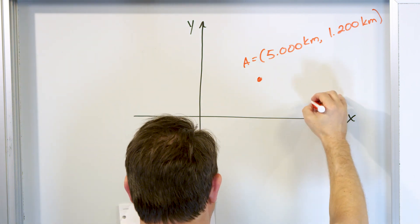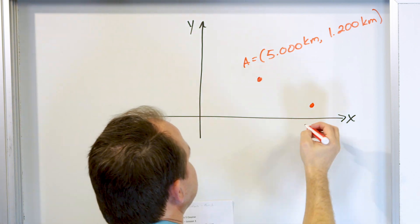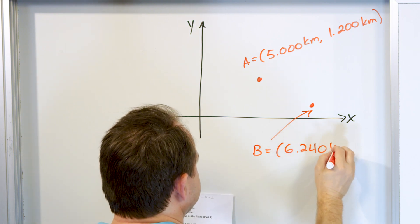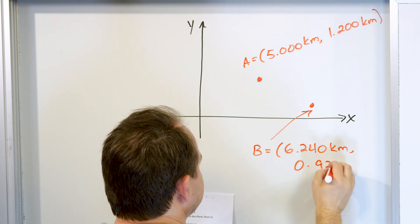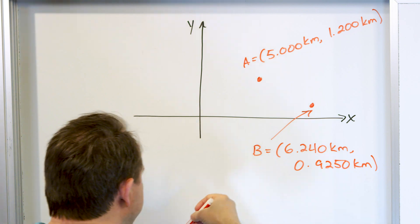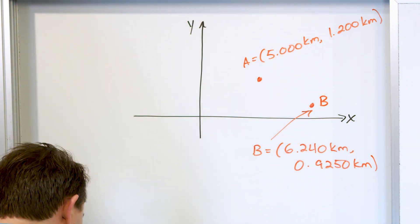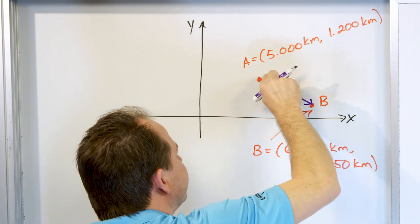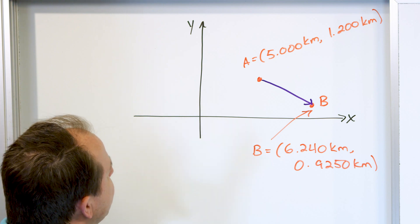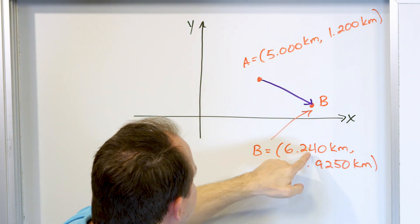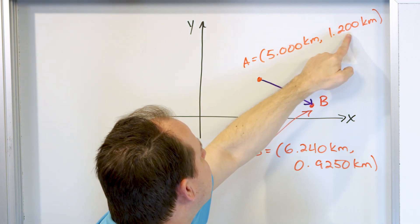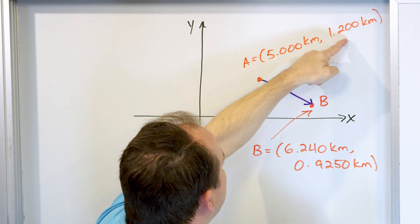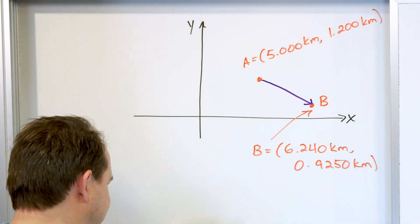Then later, the meteor moves down a little bit. At point B the coordinates are 6.240 kilometers, 0.9250 kilometers. The meteor may have gone all over the place and ended up there, but we're going to assume some straight-line distance. The x-coordinate increases to 6.240, so it goes in the positive x direction. But we started at 1.2 kilometers height and ended up lower at 0.925. So the x-coordinate increased but the y-coordinate decreased, giving a slanting downward trajectory.